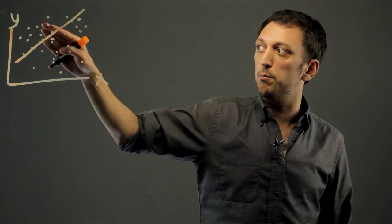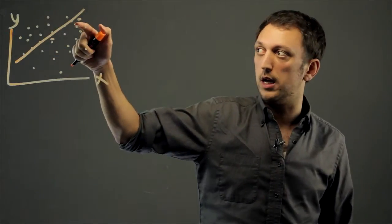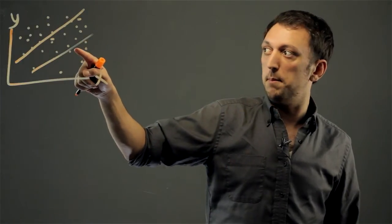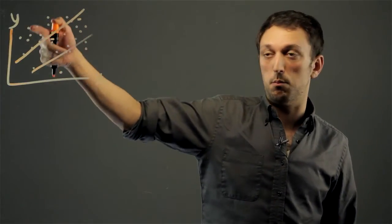This would be the line of best fit because more of the points are closer to the line, as opposed to, say, here, where it's close to several points, but it's not close to more of the points.